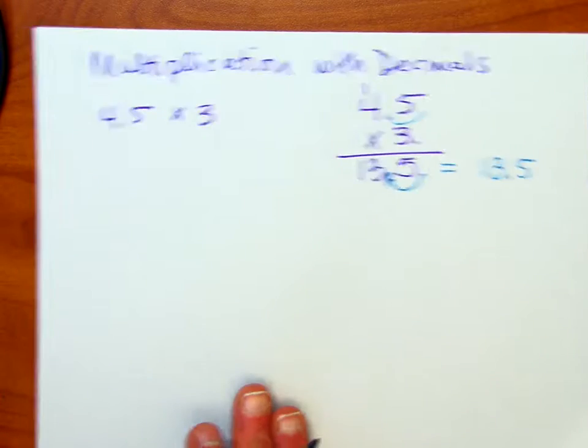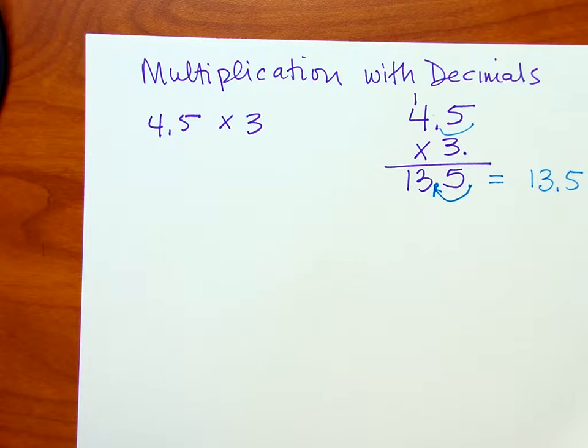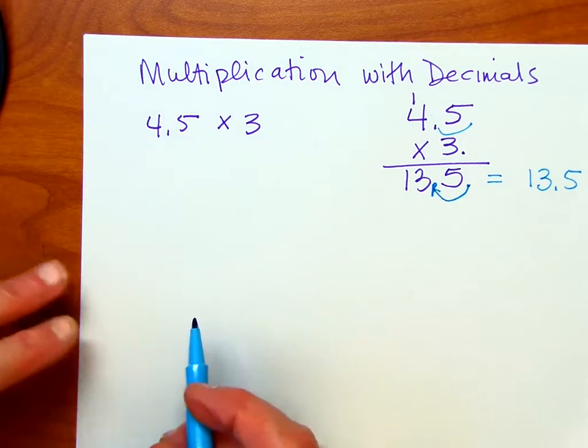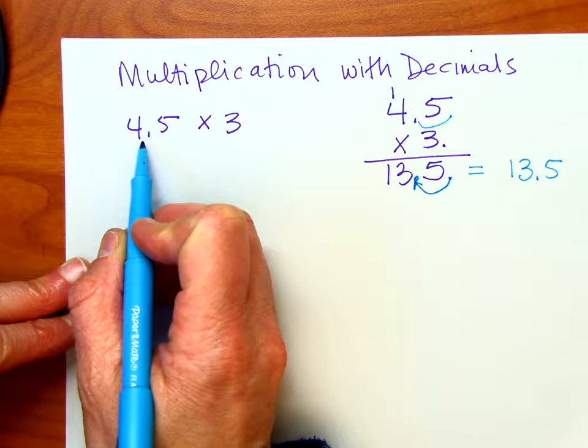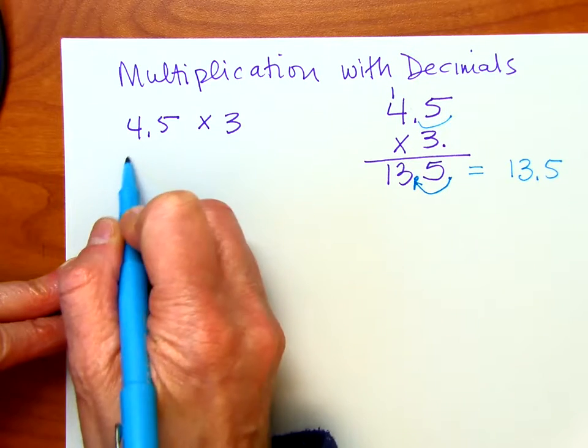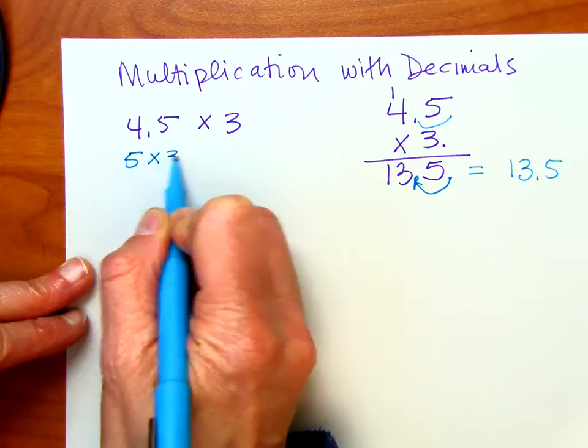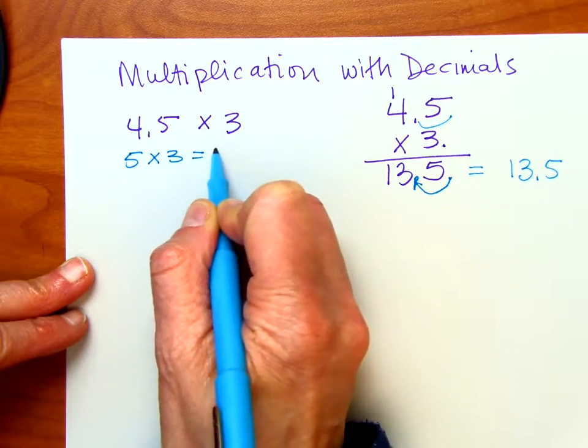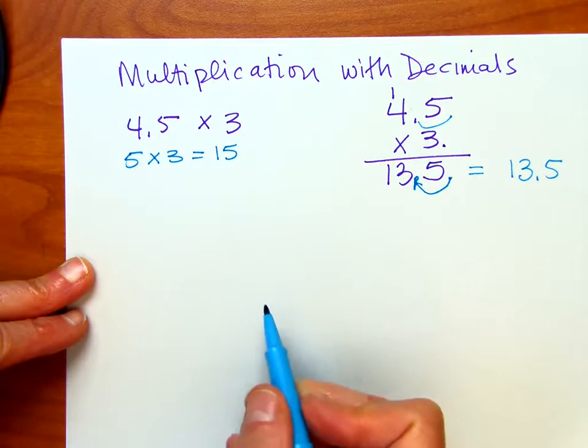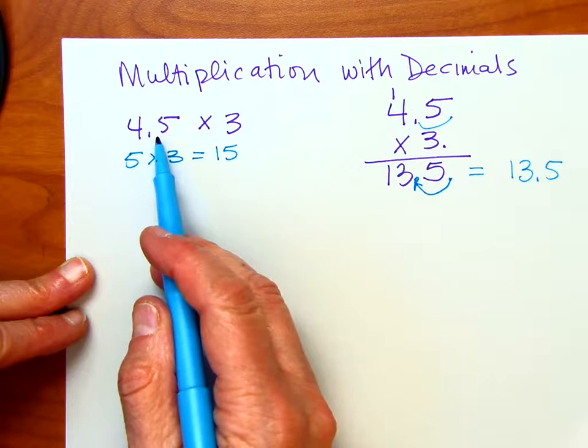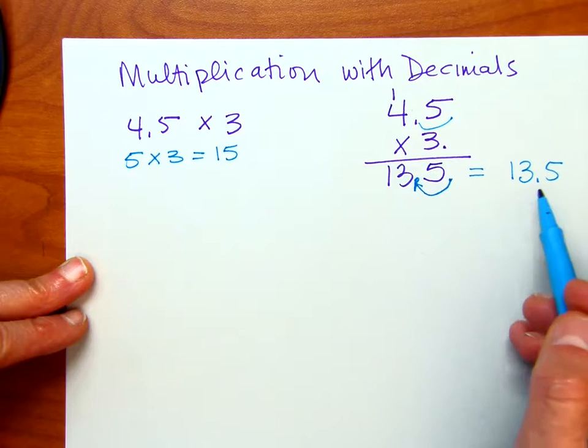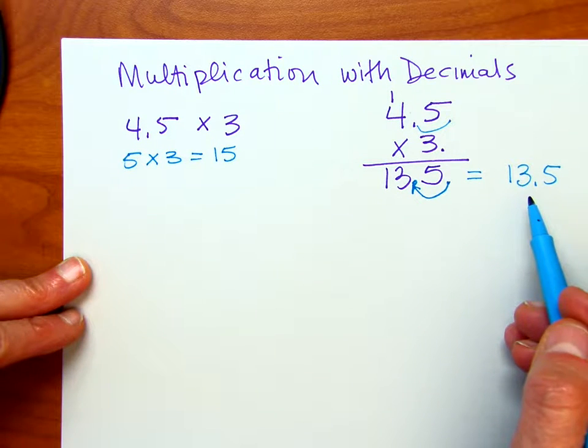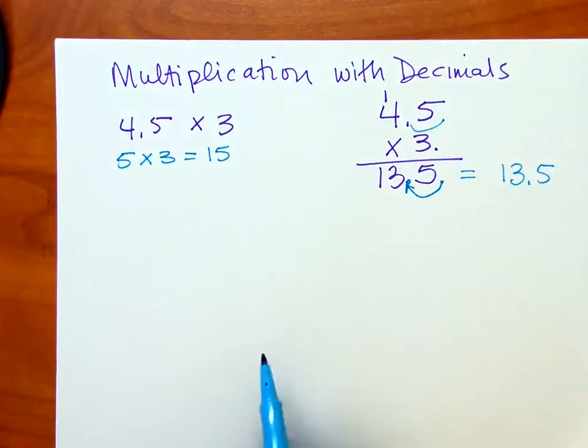And if I had done a little estimation before I actually did the problem, I could have rounded this to the nearest whole number, which would have been 5. And 5 times 3 would give me 15. Now because I'm rounding up, I know my answer is going to be a little bit less than the 15. And sure enough, it is. Let's go ahead and do a couple more.